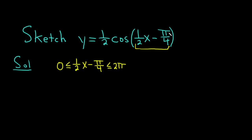Step one is you take whatever is inside the function and set it between 0 and 2π. This procedure also works when graphing a sine function. The next step is to solve this inequality for x. To do that, we start by adding π/4 to all three sides.